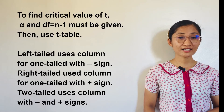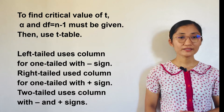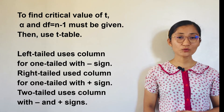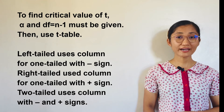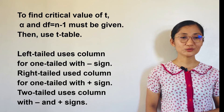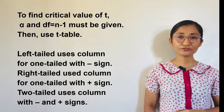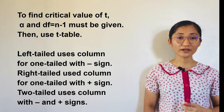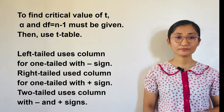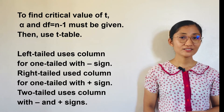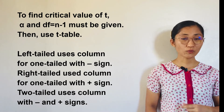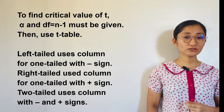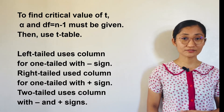To find the critical value of T, or T-score, the significance level and degrees of freedom — df equals n minus 1 — must be identified, then use the T-table. A left-tailed test uses the column for one-tailed with a negative sign, whereas a right-tailed test uses the column for one-tailed with a positive sign, and a two-tailed test uses a column with both negative and positive signs.